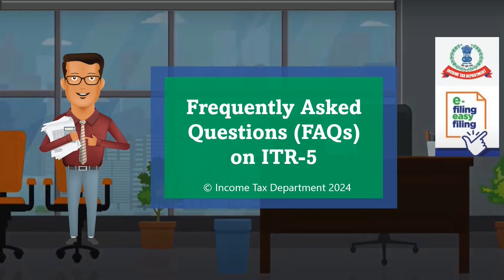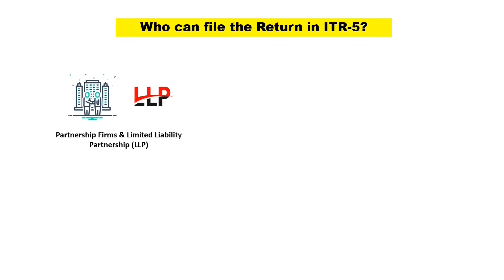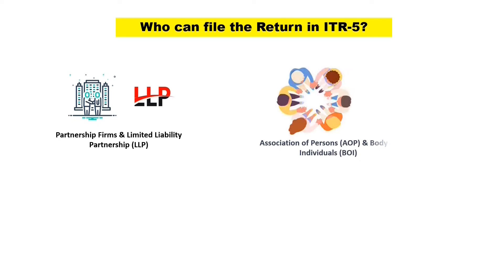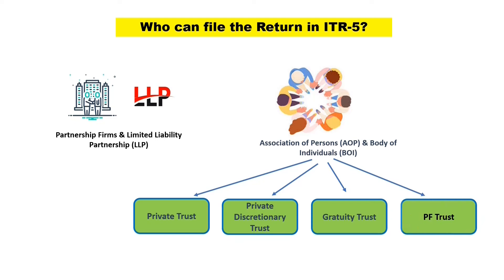This video is on FAQs on Form ITR-5. Form ITR-5 can be used for filing income tax return by partnership firms or limited liability partnership firms. The form can also be used by association of persons, body of individuals including trusts like private trust, private discretionary trust, gratuity trust, and PF trust which are not eligible to file Form ITR-7.